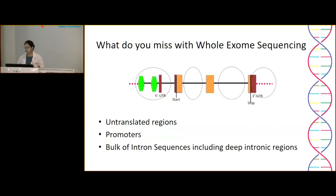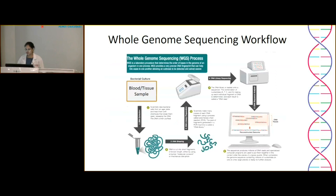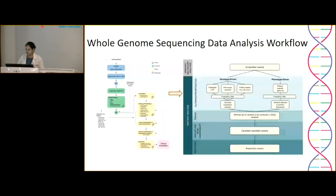What is mainly missed with whole exome sequencing is the untranslated regions, promoters, and bulk of introns. To overcome that, one can go for whole genome sequencing, which gives comprehensive coverage of everything in the genome. It allows detection of disease-relevant variants beyond the exome, such as DNA structural alterations, deep intronic variants, variants in non-coding regions, and repeat expansions. However, the complexity of workflow and data analysis is all the more complicated.